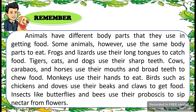Remember, animals have different body parts that they use in getting food. Some animals, however, use the same body parts to eat. Frog and lizard use their long tongue to catch food. Tiger, cats, and dogs use their sharp teeth. Cows, carabao, and horses use their mouth and broad teeth to chew food. Monkeys use their hands to eat. Birds such as chicken and ducks use their beaks and claws to get food. Insects like butterflies and bees use their proboscis to sip nectar from the flower.